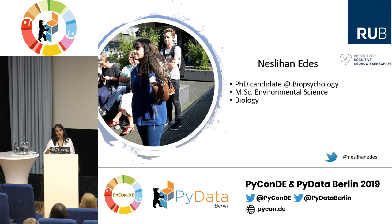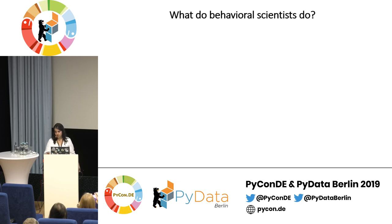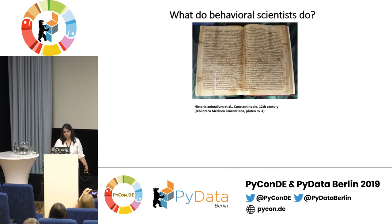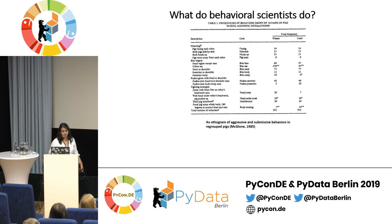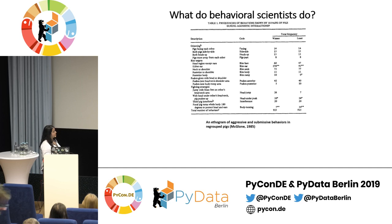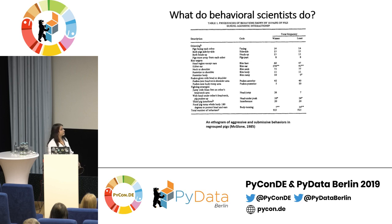I'm defining myself as a behavioral scientist and I'm on the way to becoming a real one. I'd like to talk about what behavioral scientists do. This is handwriting from Aristotle where he defines different animal behaviors like coercive and agonistic behavior. Here you see an experimental design from a paper — an ethogram for aggressive and submissive behaviors in pigs where they observed over 1800 different behaviors in total.